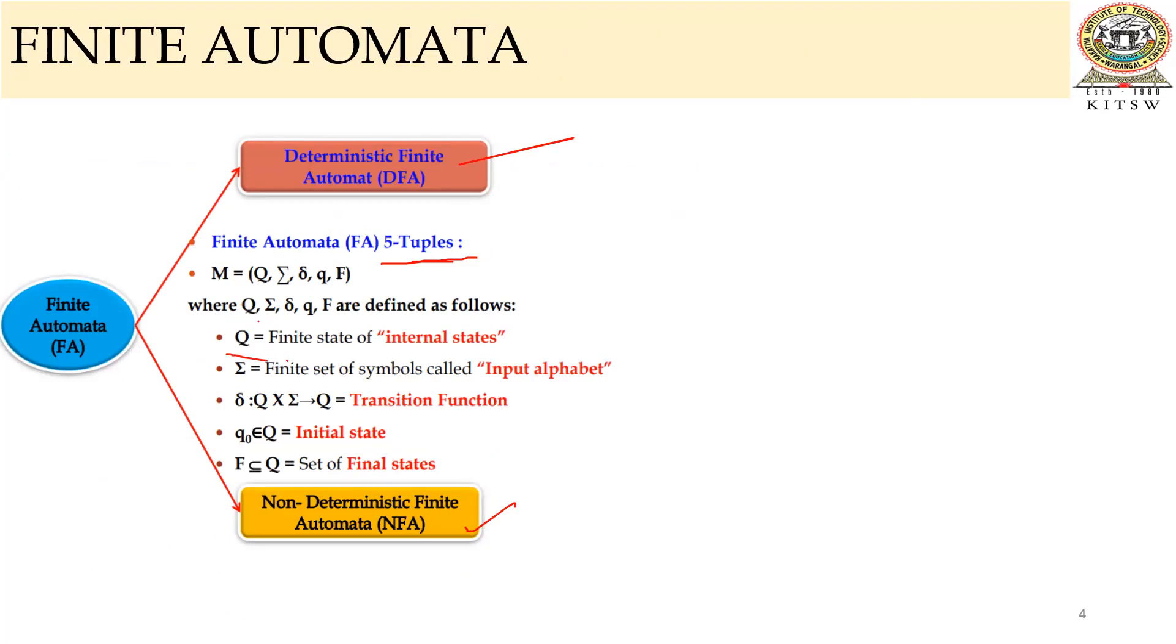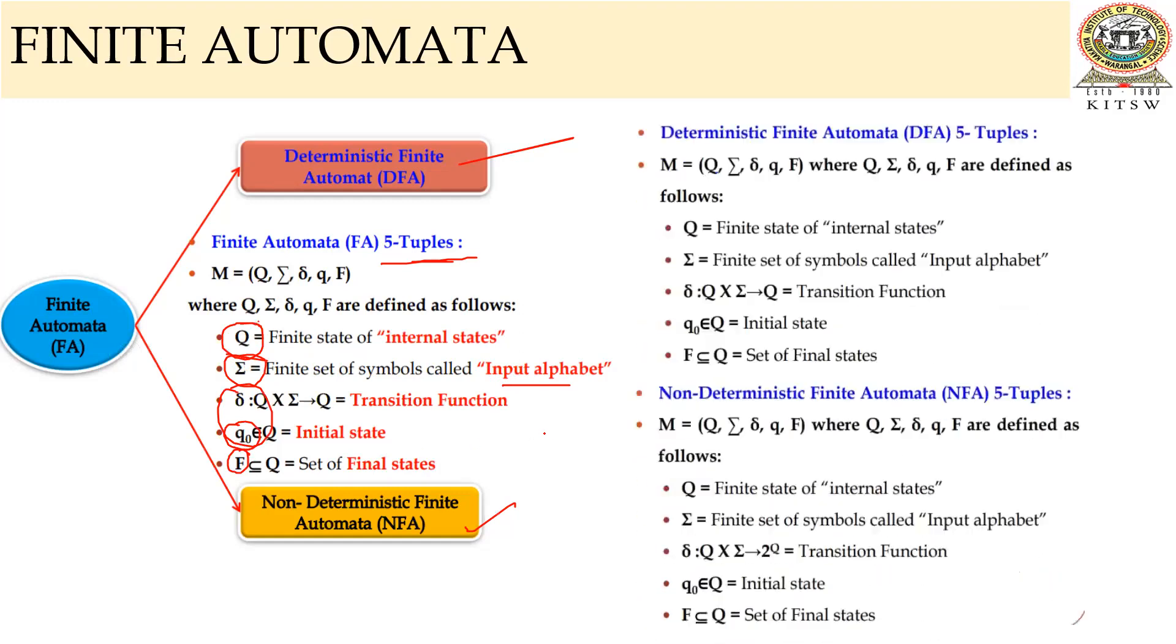What are these five-tuples? Q is the number of states in the automata. Sigma is a finite set of symbols called input alphabets. Gamma is a transition function, and Q0 is an initial state. F is a final state.